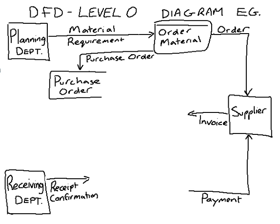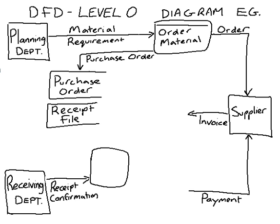The receiving department is sending our receipt confirmation, and as with all paperwork it should be stored, so we're going to make a receipt file. However, we cannot go directly from an external entity to a data store — there has to be a process in between. So we will make a process labeled 'Update Receipt File', and from there the receipts will be uploaded into the file.